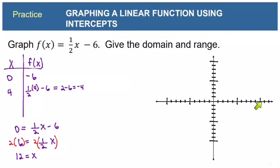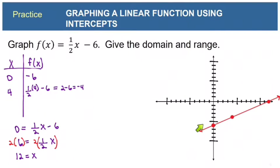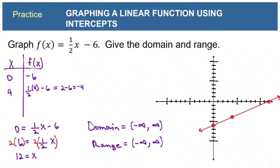We plot the y-intercept (0, negative 6), the point (4, negative 4), and the x-intercept (12, 0), and connect them to form a straight line. The domain and range, because this is a linear function, are both negative infinity to positive infinity. The domain extends as far left as you can imagine to as far right, covering all x values. The range extends as far down to as far up, covering all y values.